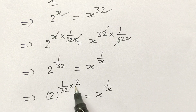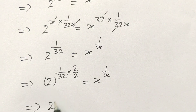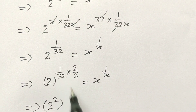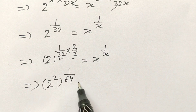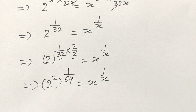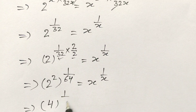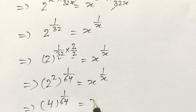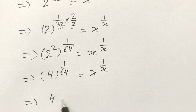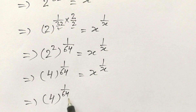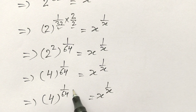Now if we multiply by 2 over 2, we can write 2 squared to the power 1 over 64 is equal to x to the power 1 over x. So 2 squared is 4, giving us 4 to the power 1 over 64 is equal to x to the power 1 over x.